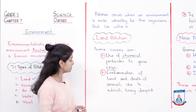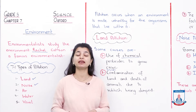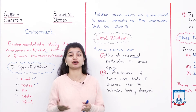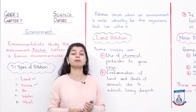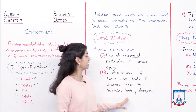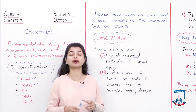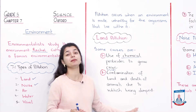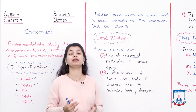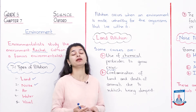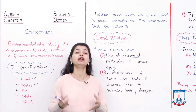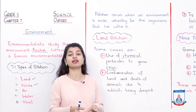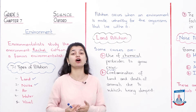The second cause is contamination of land and death of animals due to rubbish being dumped. Dumping rubbish is a very common practice, especially in our country. When rubbish is dumped, the land becomes contaminated — meaning it gets damaged and unusable. Animals in that area can end up dying because of the rubbish, the germs, and the diseases it produces. This is a form and cause of land pollution.